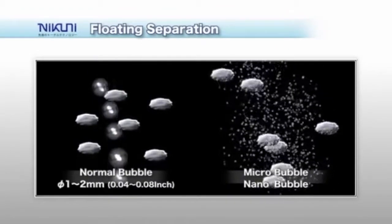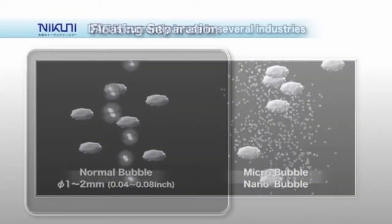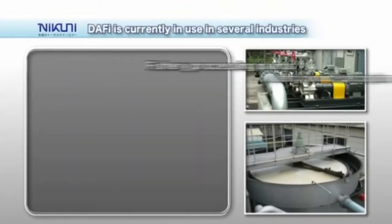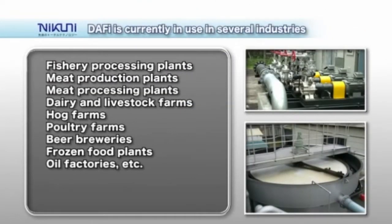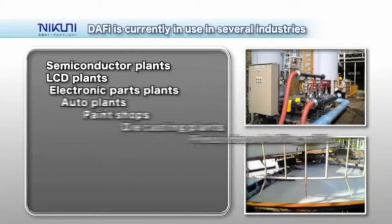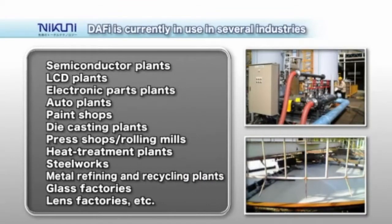The Nikuni KTM DAF is currently in use in several industries. Our system is used to clarify water discharge from food processing facilities, including fishery processing plants, dairy and livestock raising facilities. Additional applications include the removal of impurities from recycled water and discharge water from industrial manufacturing facilities, including semiconductor and automotive plants.